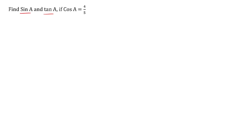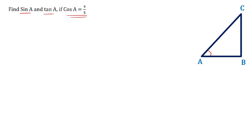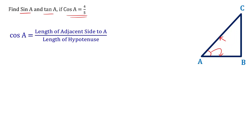Next problem: find sin A and tan A if cos A equals 4 by 5. Cos A is defined as the length of the adjacent side to angle A divided by the length of the hypotenuse, which equals AB by AC. So AB by AC equals 4 by 5, meaning AB equals 4 and AC equals 5. Using this information, we have to find sin A.